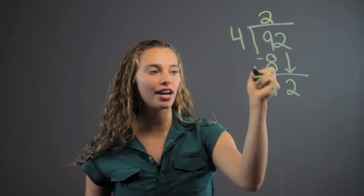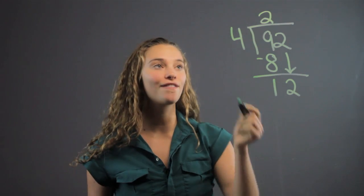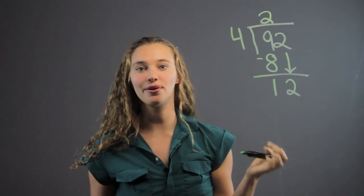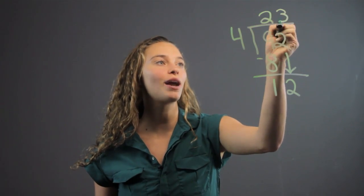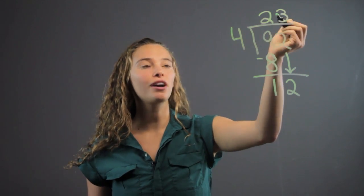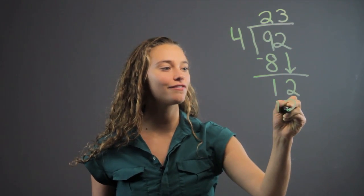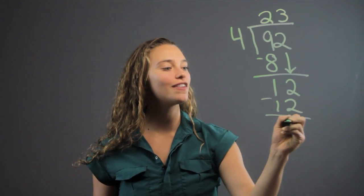Well, what's 4 into 12? Luckily, 4 goes into 12 evenly. It goes in 3 times. So we write the 3 right above the 2. 4 times 3 again is 12. 12 minus 12 is 0.